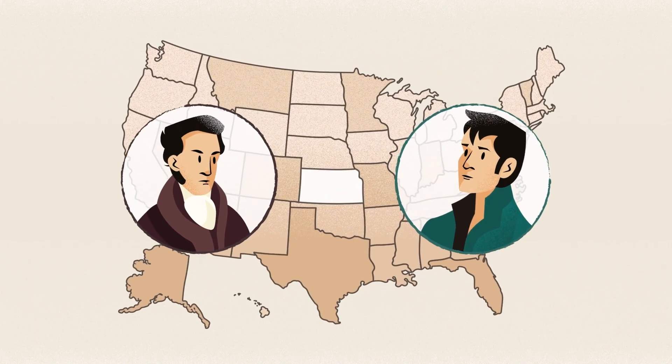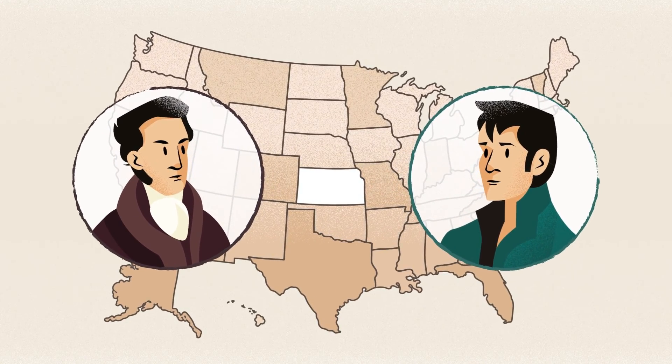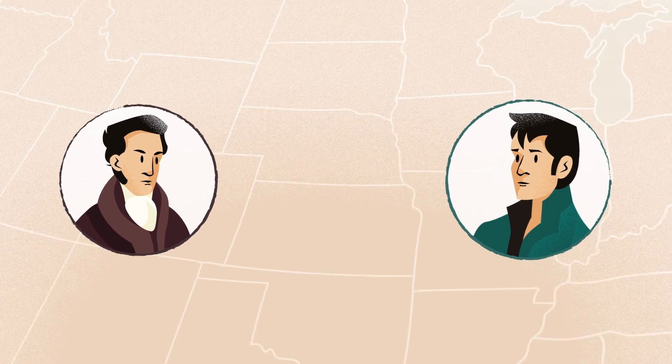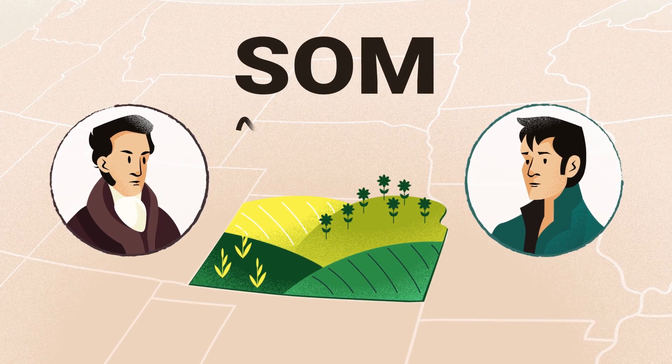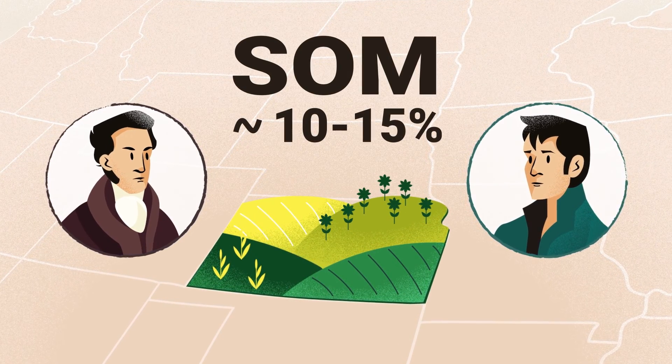When Lewis and Clark explored the Louisiana Purchase for potential agriculture opportunities, the grasslands of the central United States had an average soil organic matter of 10-15%.